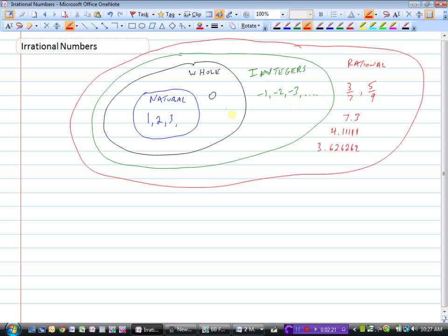So rational numbers are all of the naturals, the wholes, and the integers, plus any number that can be written as a fraction, or decimals that either end like 7.3 or have repeating patterns that go on forever. But in this video, we're going to look at another weird set of numbers - let's make them purple - that we call irrational numbers.